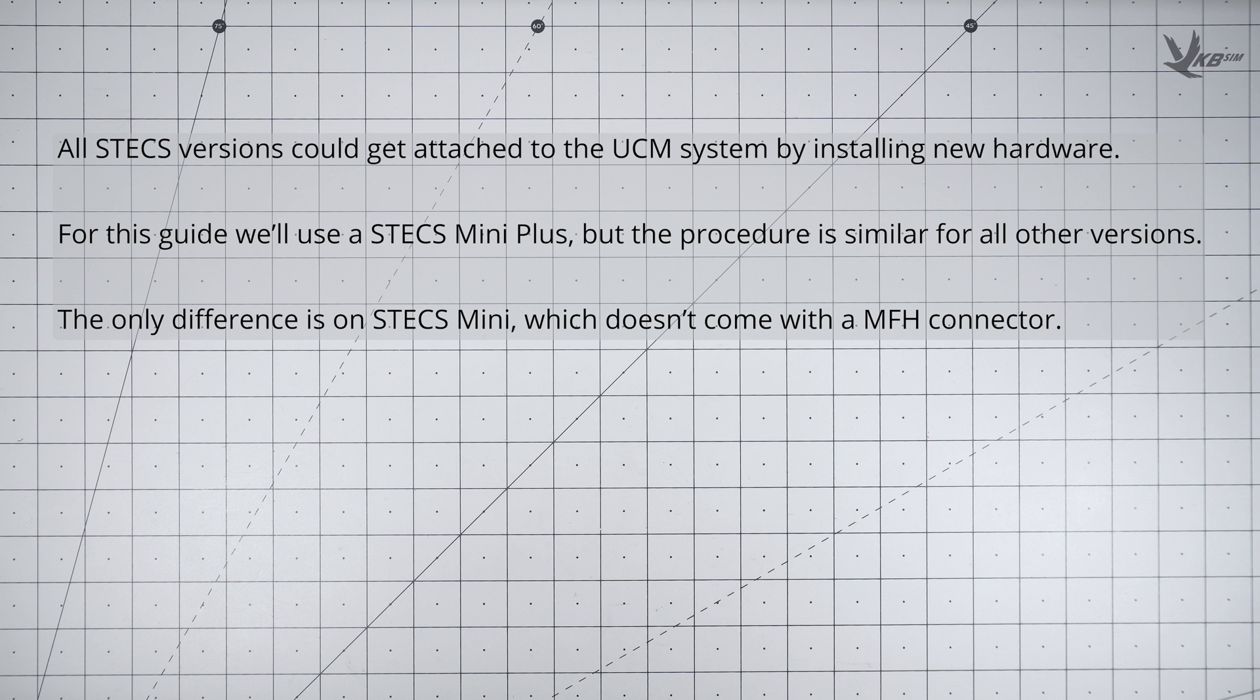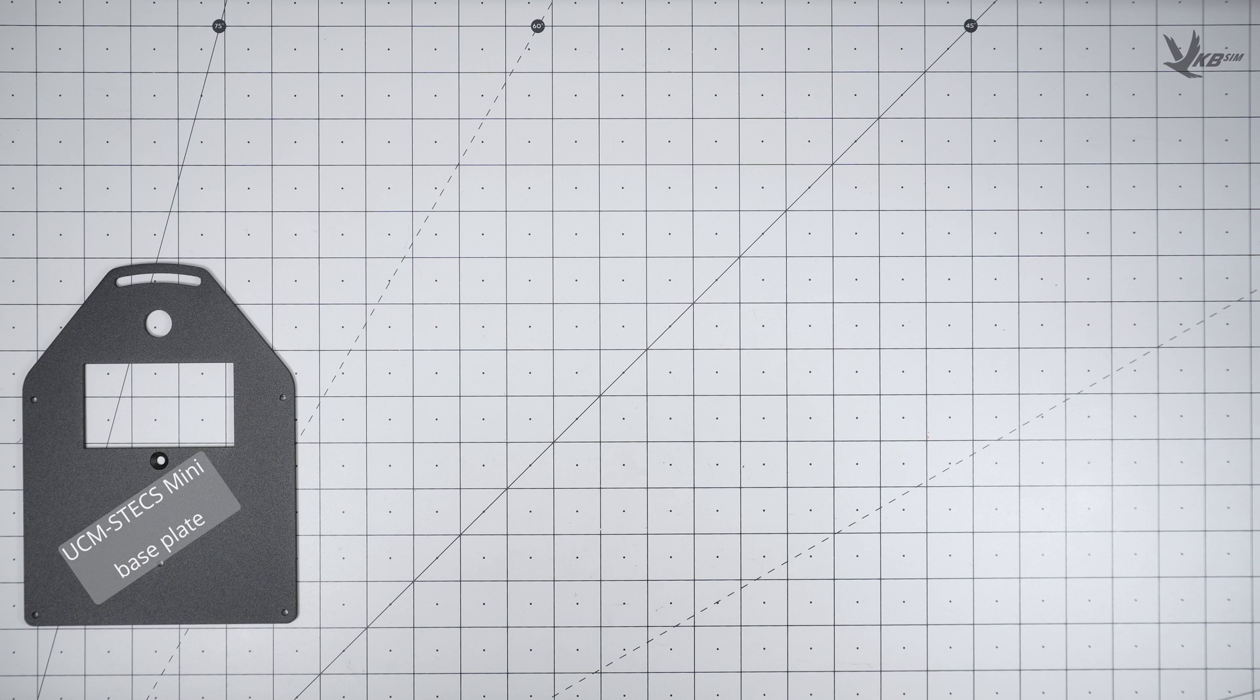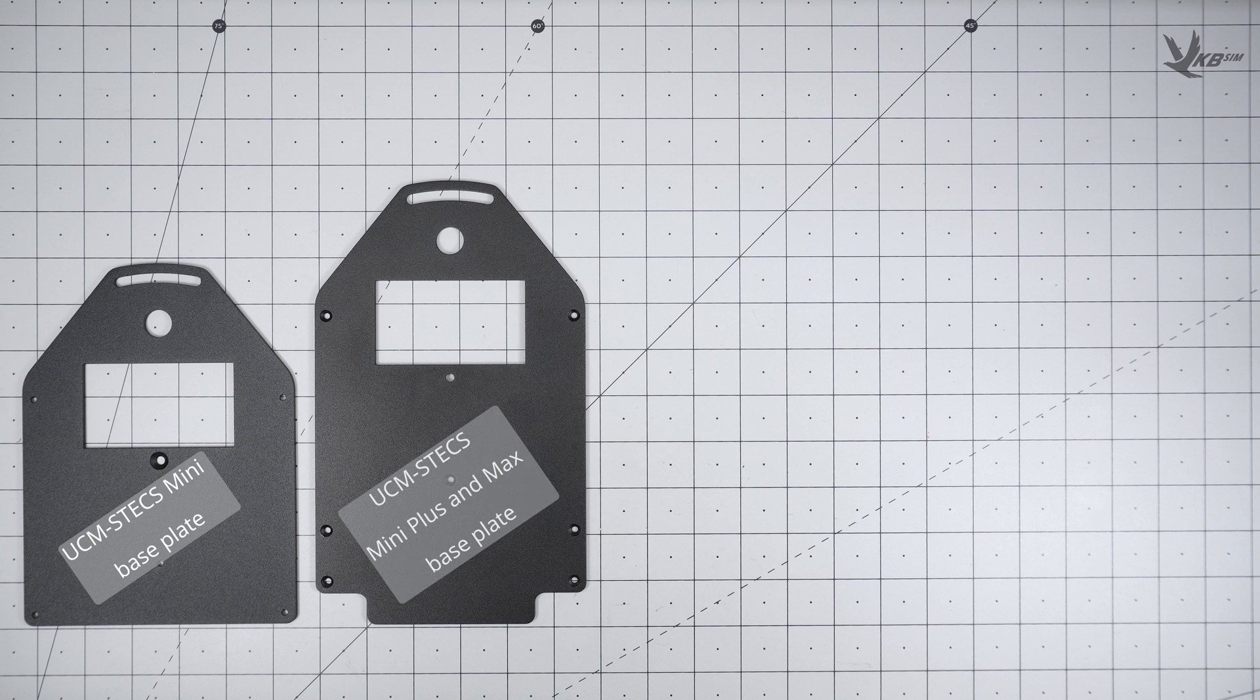With the help of a bit of new hardware, all versions of the STECS throttle can be attached to the UCM system. In this guide, we'll be demonstrating this process using a STECS Mini+. The steps are very similar for all other versions, besides the STECS Mini, because of its lack of an MFH connector.